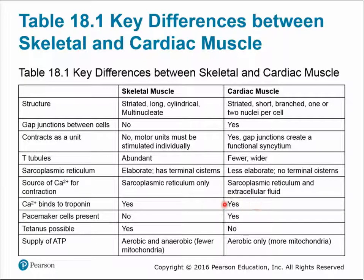Calcium still binds to troponin in both cardiac and skeletal muscle. Cardiac muscle cells have their own pacemaker cells. Regarding ATP supply, cardiac muscle relies exclusively on aerobic metabolism — that's why it has so many mitochondria — to ensure it never runs out of energy. Skeletal muscle can tap into anaerobic metabolism and can become fatigued and stop functioning, but if cardiac muscle became fatigued and the heart stopped beating, we would die. So numerous mitochondria ensure continuous aerobic respiration in cardiac muscle.